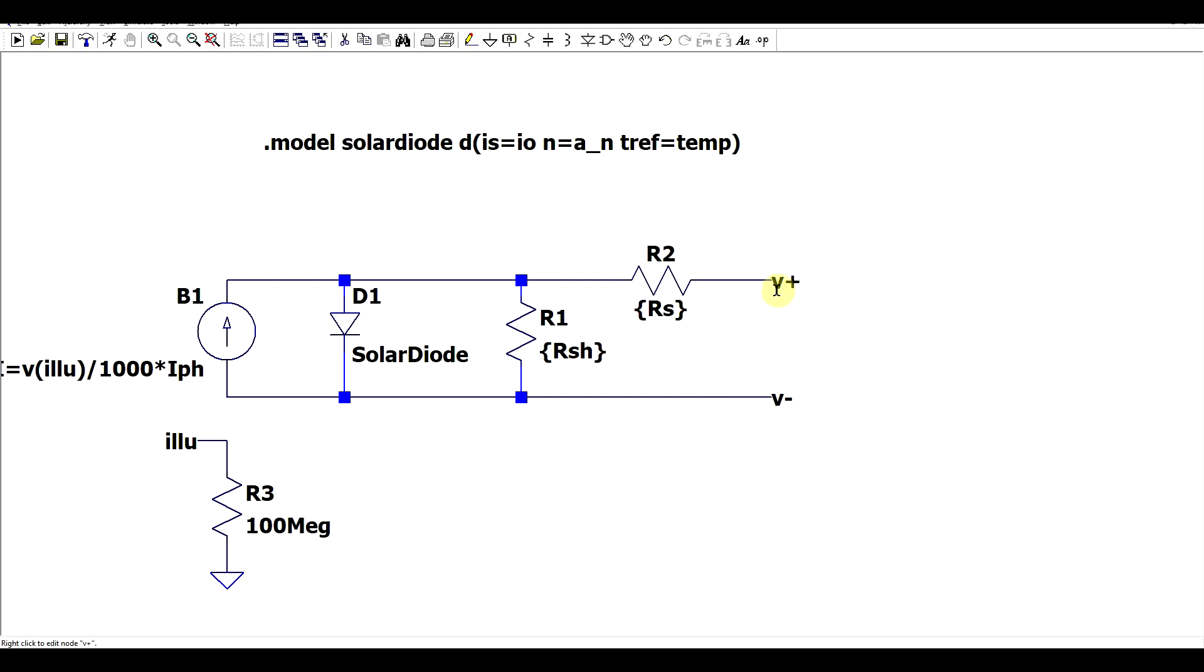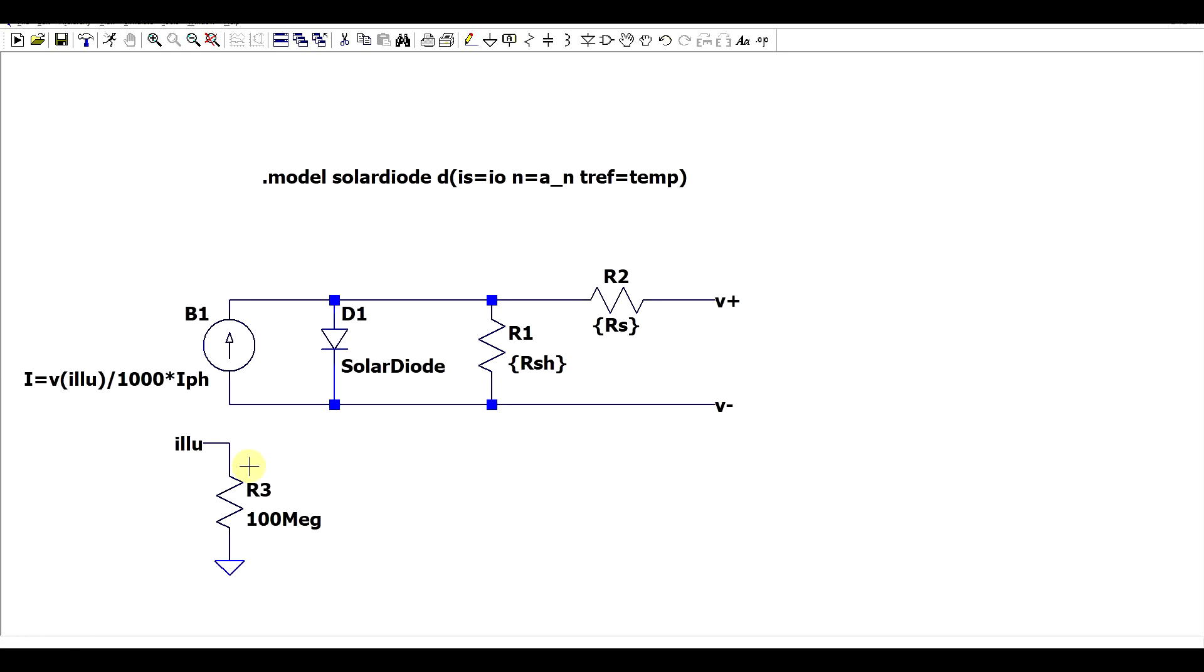For example here I'm using V plus and V minus for the supply lines but I also have this illumination net which we will be using to set the illumination exposure of the solar panel. Now other than these nets getting names, the various parameters that you will be using in the model also need to have some special names.